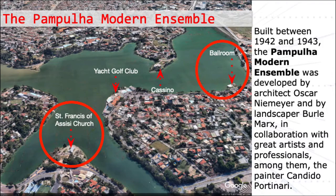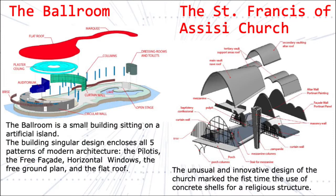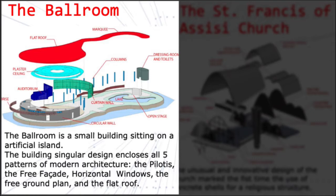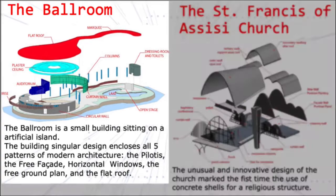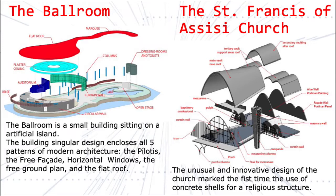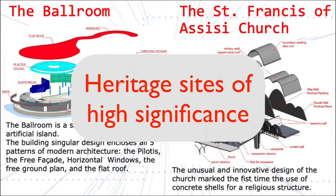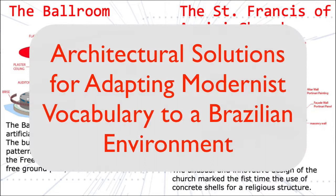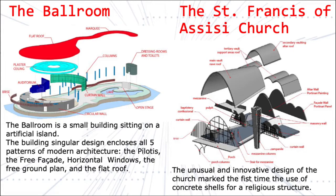The buildings selected for our augmented reality visualization are the ballroom and the church. The ballroom is a small building sitting on an artificial island, and its singular design encloses all five patterns of modern architecture: the pilotis, the free façade, horizontal windows, the free ground plan, and the flat roof. The St. Francis of Assisi Church's unusual and innovative design marked the first-time usage of concrete shells for a religious structure. Both buildings are heritage sites of high significance, receive thousands of annual visitors, and reflect Niemeyer's Brazilian modernist vocabulary.